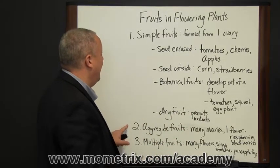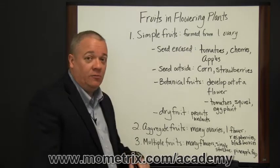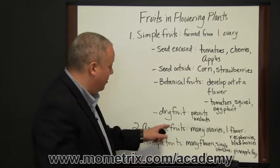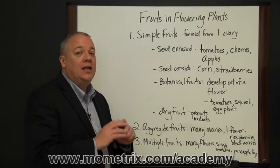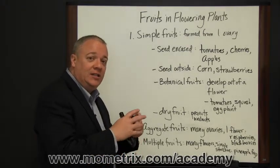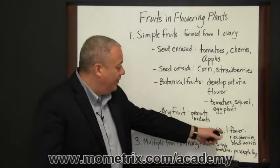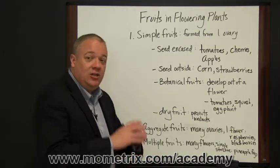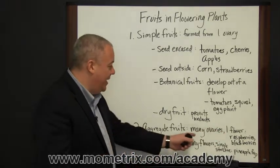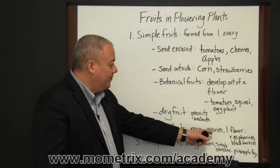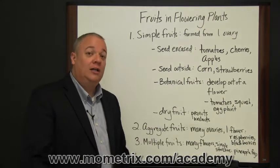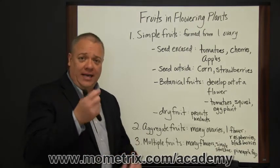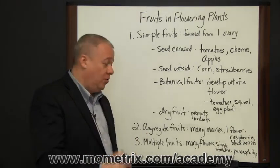The next category of fruits in flowering plants are aggregate fruits. In this situation, you've got many ovaries individually fertilized that then expand and develop from one flower. Many ovaries individually fertilized, one flower, and things like raspberries and blackberries would fall under this category. When you look at them, you can see all the little individual ones.